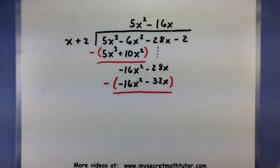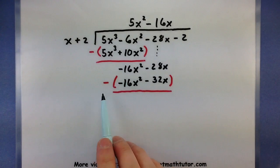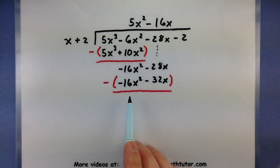Be very careful with your signs, but notice how it does work out pretty good for our first terms. So a -16x² minus a -16x². That's essentially like adding a 16x². They'll cancel each other out and give me a zero.